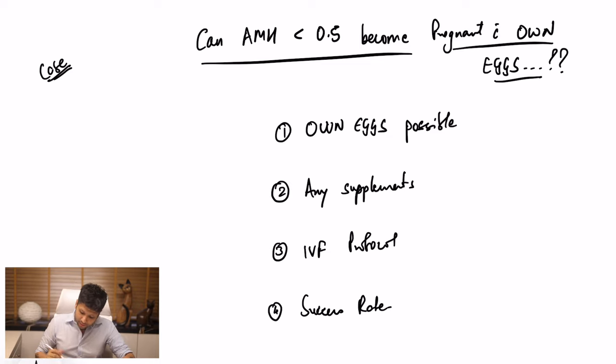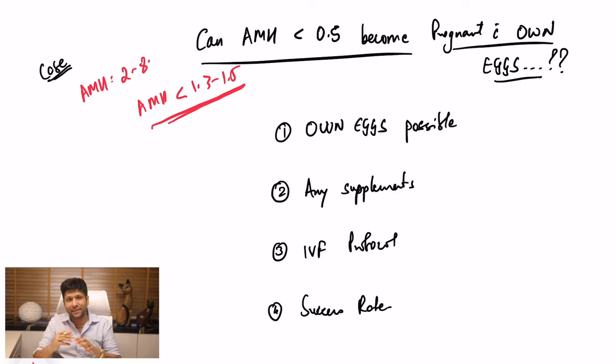Dekhe, sabse pehli baat, normal value of AMH is anything which is between 2 to 8. Jab kabhi bhi kisi ka AMH ka value less than 1.3 ya 1.5 ke neeche chala jata hai, isse hum bolte hai low AMH. Aur jab kabhi bhi value less than 0.5 ho jata hai, isse hum bolte hai very low AMH.